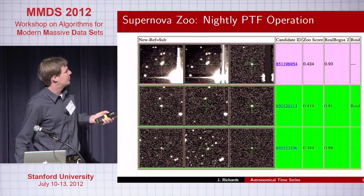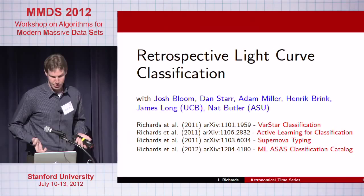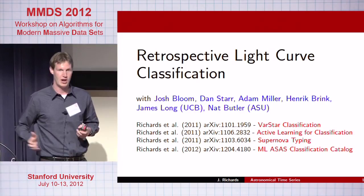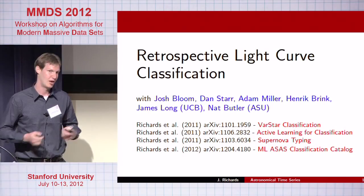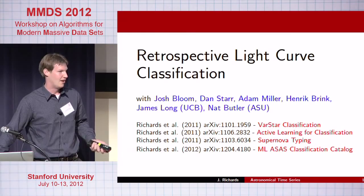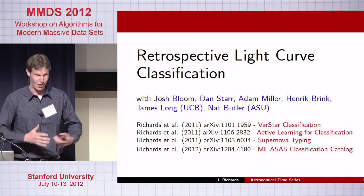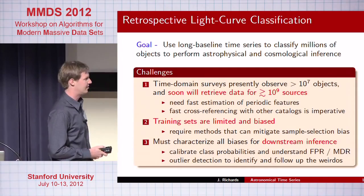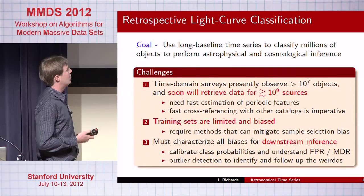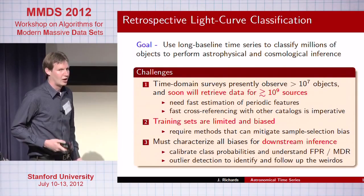The second part is retrospective light curve classification — what happens at the end of the survey when we have all this time series information, having followed up on some transients and supernovae, and have all these variable stars. Astrophysicists want to use all the data, yet without good classification it's useless. The goal is to use these long-baseline time series — surveys lasting from a couple of years up to ten or more years — on millions up to a billion objects. For LSST, we're talking on the order of ten to the nine sources.